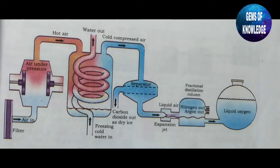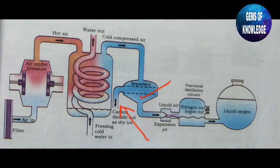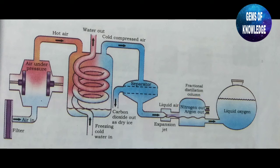In the apparatus, air is passed through a filter, compressed, then blown through a column where freezing cold water circulates in a spiral pipe to cool it further. The compressed air moves through a separator where carbon dioxide comes out as dry ice, and the remaining gases enter an expansion jet producing liquid air. The liquid air enters the fractional distillation column, from which nitrogen and argon are drawn off at their respective openings, and oxygen is collected in a beaker.